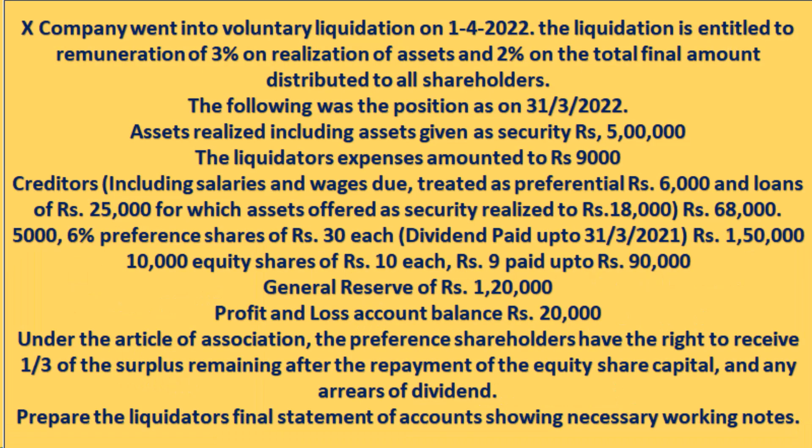X company went into voluntary liquidation on 1st April 2022. The liquidator is entitled to remuneration of 3% on realization of assets and 2% on the total final amount distributed to all shareholders. The following was the position as on 31st March 2022: assets realized including assets given as security is 5 lakh. Liquidator's expenses amounted to rupees 9,000. Creditors including salaries and wages due treated as preferential is rupees 6,000, and loans of rupees 25,000 for which assets offered as security realized to 18,000 — that is rupees 68,000 total. 5,000 6% preference shares of rupees 30 each, dividend paid up to 31st March 2022, meaning one year dividend is in arrears — that is rupees 1,50,000.